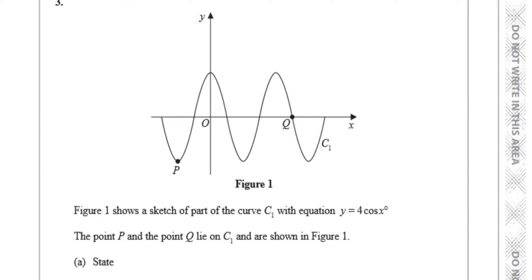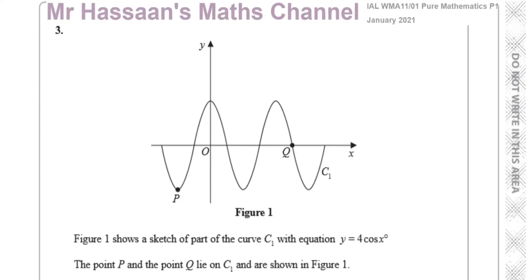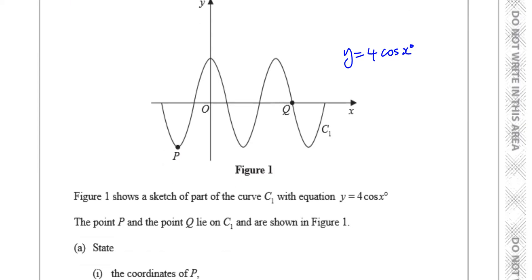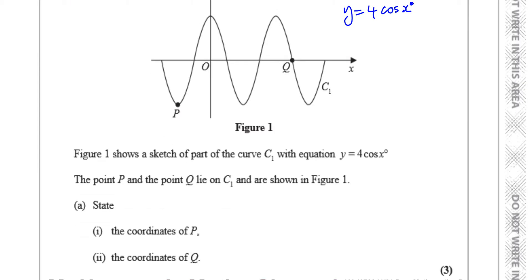It says figure 1 shows a sketch of part of the curve C1 with equation y equals 4 cosine x — this is in degrees. The points P and Q lie on C1 and are shown in figure 1. State the coordinates of P and the coordinates of Q.